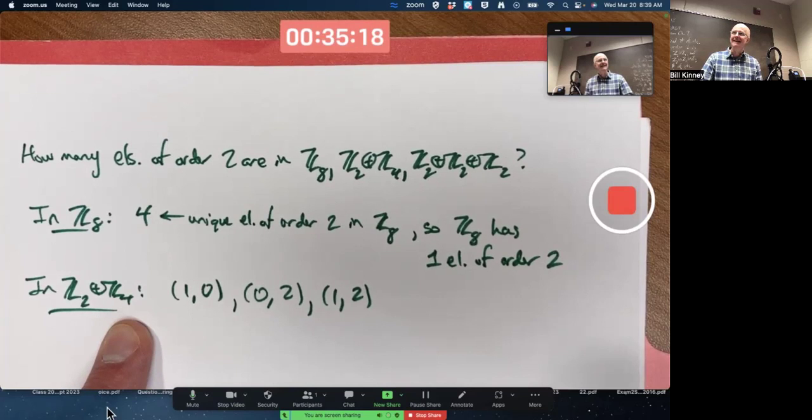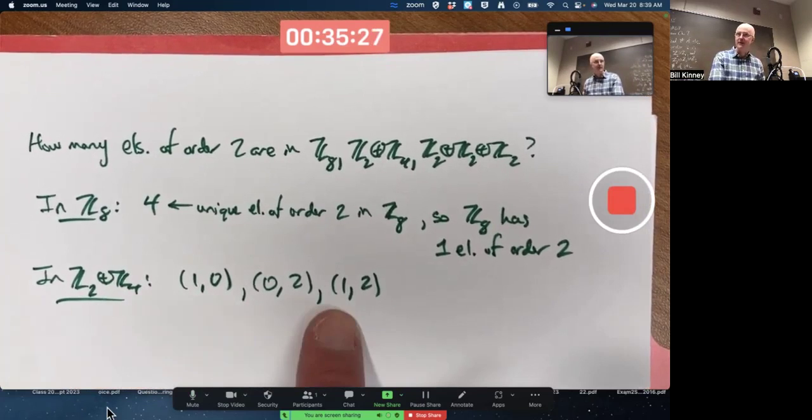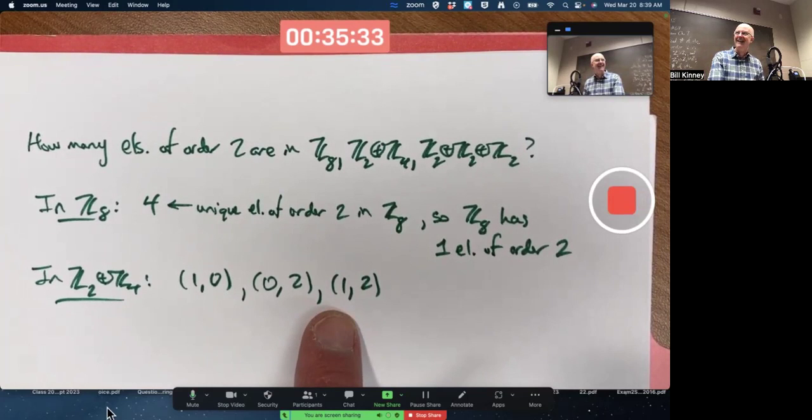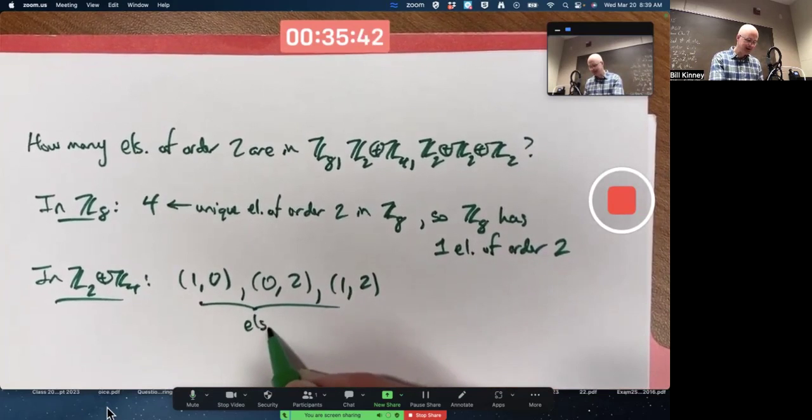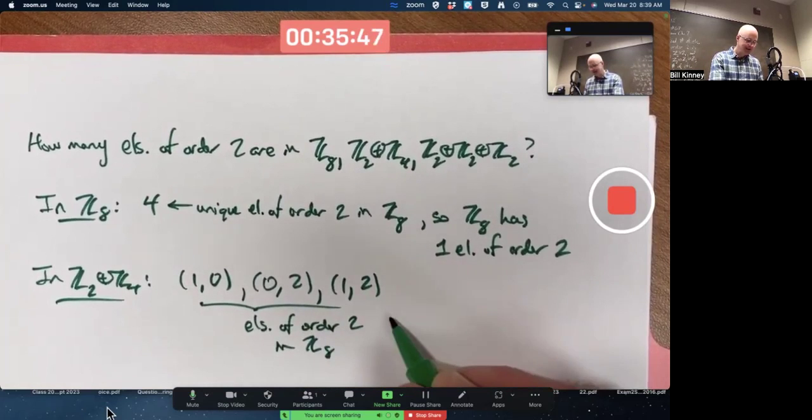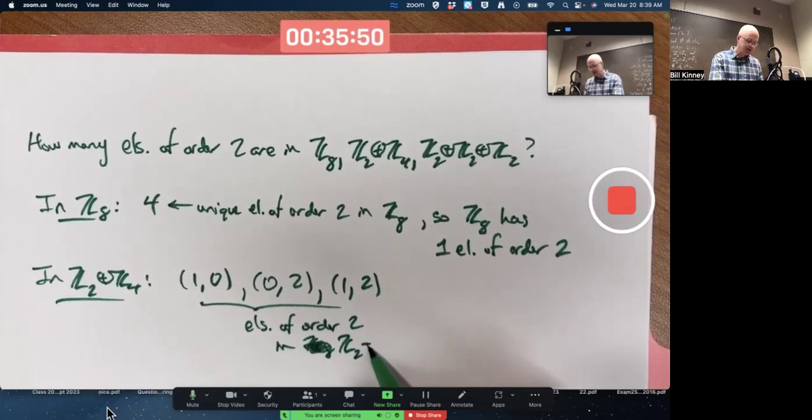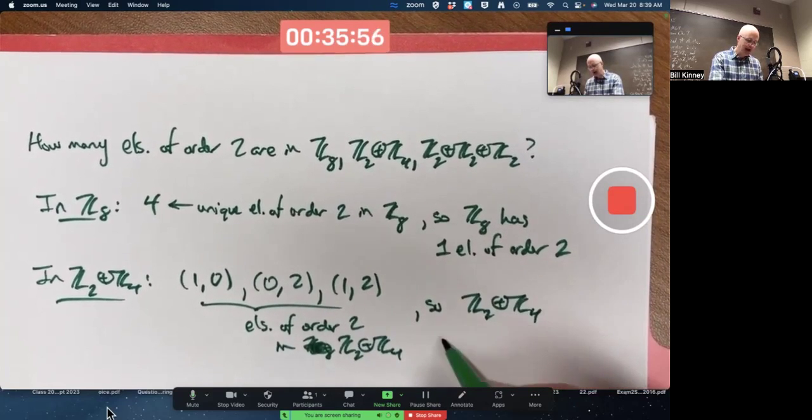Anything else? I don't think so. I think that's it. You could try how many elements are in here total. There's eight. We've listed three of them. There's zero, zero as well. Well, I'm pretty sure that all the other elements don't have order two. You're nodding your head. Yes. Okay. These are elements of order two. Oh, excuse me. The external direct product of Z2 is Z4. So Z2 external direct product of Z4 has three elements of order two.